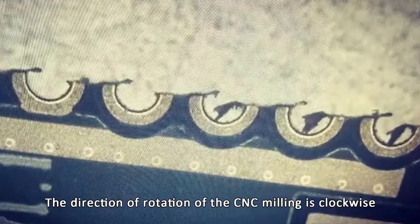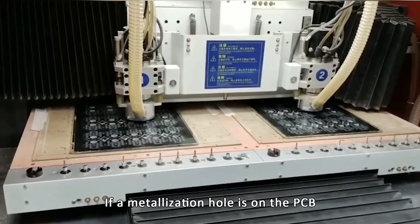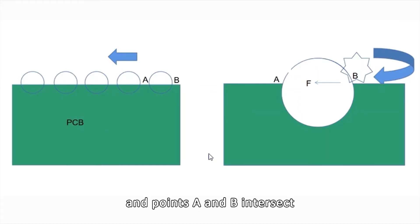The CNC milling rotates clockwise, known as a right-handed tool. If a metallization hole is on the PCB and points A and B intersect, then when the right-handed tool is at point B, a shearing force F is applied to point B. Ideally, the shearing force F will cut off at B.